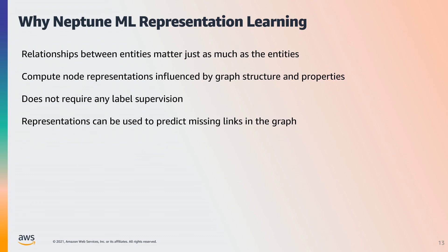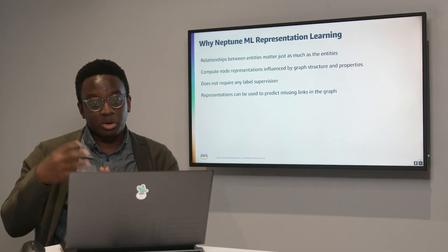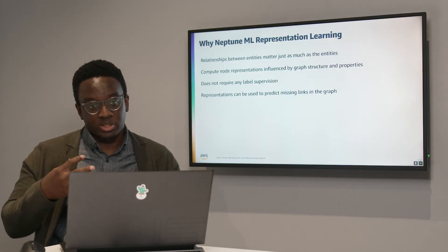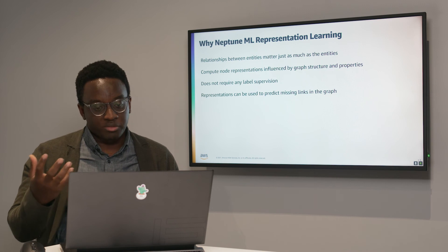The reason we use a graph representation learning framework is that the relationships between entities — the movies and the actors — matter just as much as the entities themselves. The embeddings computed will be influenced by the nodes as well as the properties and relationships around them, without requiring any human-supervised labels. These representations can also be used to complete the knowledge graph by predicting links that are missing but relevant.